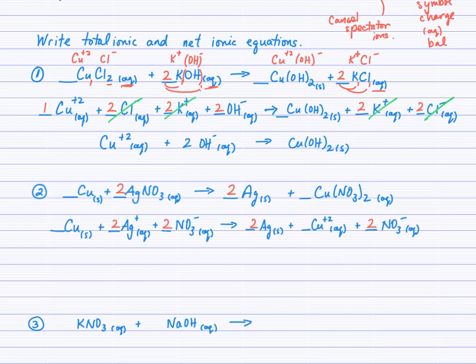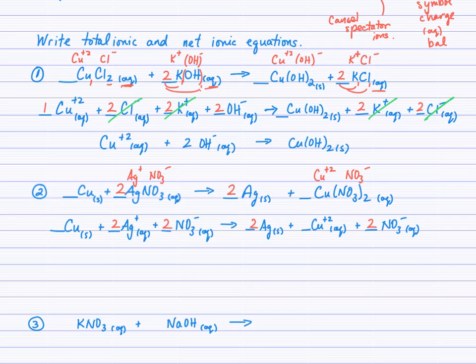Copper is above silver in the activity series, so it displaces to form silver solid and copper 2 nitrate aqueous. After balancing and writing states, I write the total ionic equation. I'm only dissociating the aqueous compounds — so I consider the silver ion and nitrate ion making up silver nitrate, and the copper 2 ion and nitrate ion in copper 2 nitrate. Those are the dissociated ions you see in the total ionic equation. Pause the video to cancel spectator ions and write the net ionic equation.